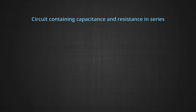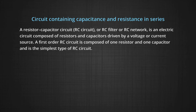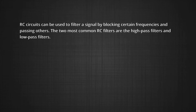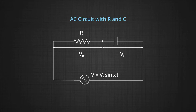Now we will discuss a circuit containing capacitance and resistance in series. A resistor-capacitor circuit, RC circuit, or RC filter, is an electric circuit composed of resistors and capacitors driven by a voltage or current source. A first-order RC circuit is composed of one resistor and one capacitor and is the simplest type of RC circuit. An RC circuit can be used to filter a signal by blocking certain frequencies and passing others. The two most common RC filters are the high-pass filter and low-pass filter. The figure shows a circuit containing a capacitor and resistor connected in series through a sinusoidal voltage source V = V₀ sin(ωt + φ).